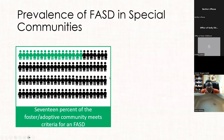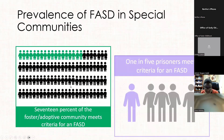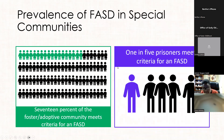As far as special communities go, 17% of the foster system meets criteria for an FASD. If you have foster and adoptive children in your settings who are having a hard time, think that they might have this underlying condition and treat them accordingly. One in five prisoners meets criteria for an FASD — this is what happens when FASD is not identified and not supported, and it is very expensive for our state. We also see a lot of inpatient psychiatric stays in our community.